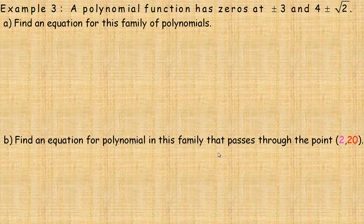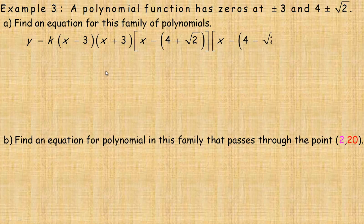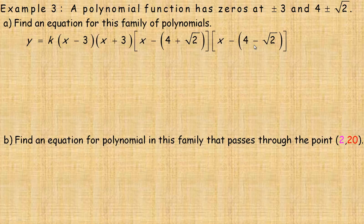In example 3, a polynomial function has zeros at plus or minus 3 and at 4 plus or minus the square root of 2 — two different zeros each, so four zeros total. Since there are four zeros, we expect this to be a quartic or fourth-power polynomial. The equation is y equals k times (x minus 3)(x plus 3) times (x minus (4 plus root 2)) times (x minus (4 minus root 2)), giving four linear factors.